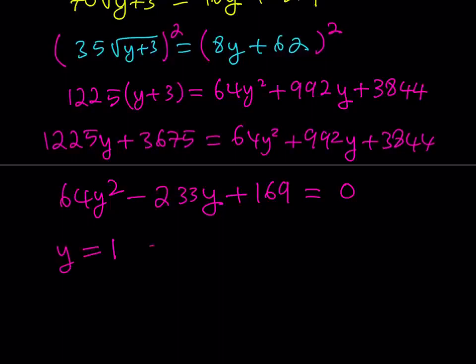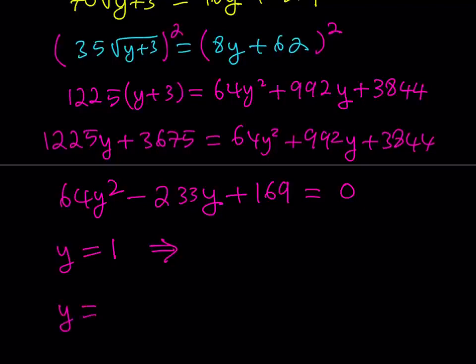Isn't that awesome? If the sum of the coefficients is 0, then y equals 1 is always a solution. For the other solution, you don't have to use the quadratic formula — instead use Vieta's formulas. Vieta's formulas tell us that the product of the roots is c over a, which is 169 over 64. Since one of the roots is 1, the other root is actually going to be 169 over 64. So we have our two y values.